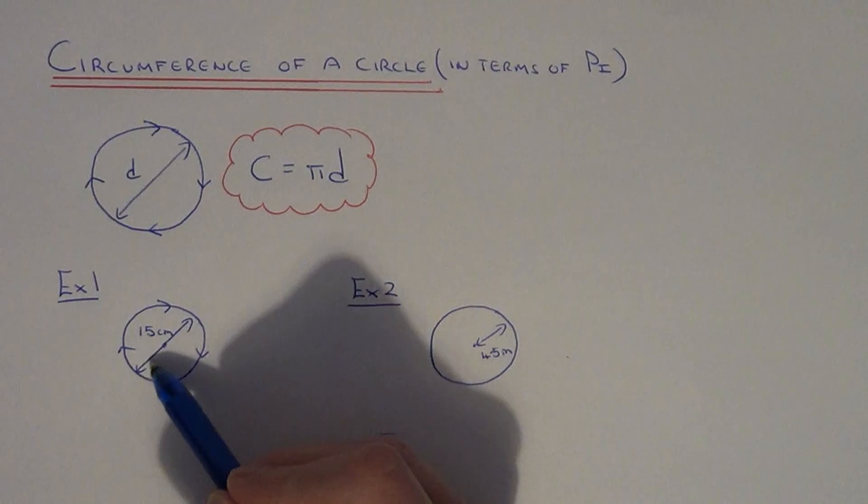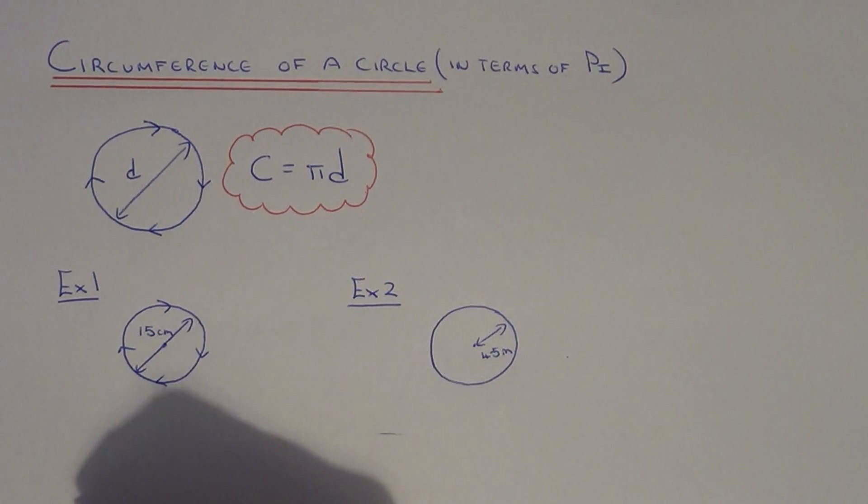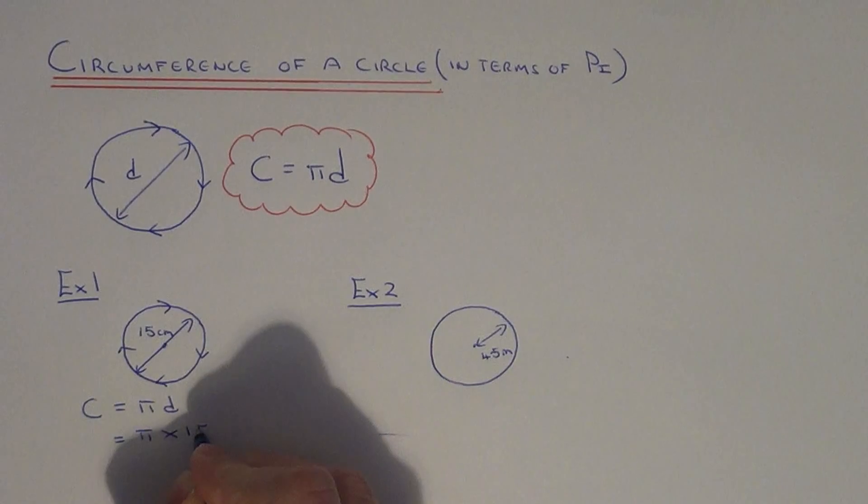In the first example, the diameter of this circle is 15. Let me just copy the formula down, which is c equals pi d. If we substitute the diameter in, that's the distance all the way across, which is given, it will be pi times 15.